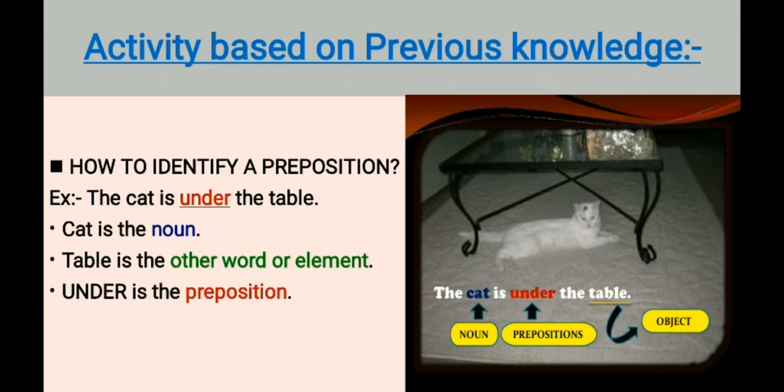Here, you can see a picture of a cat and the cat is sitting under the table. Look at the sentence very carefully. The sentence is the cat is under the table. So, here cat is a noun. And table is also a noun or other word of this sentence. So, here under, what is under? Now, under is a preposition.